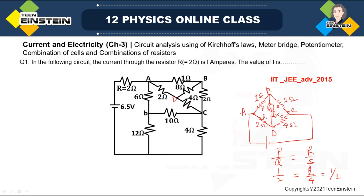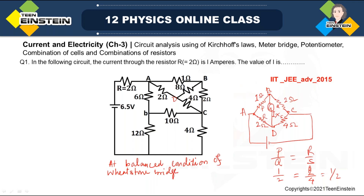At balanced condition of the Wheatstone bridge, the 8 ohm resistance can be neglected because there will be no current through it. So we can just neglect this 8 ohm resistor.